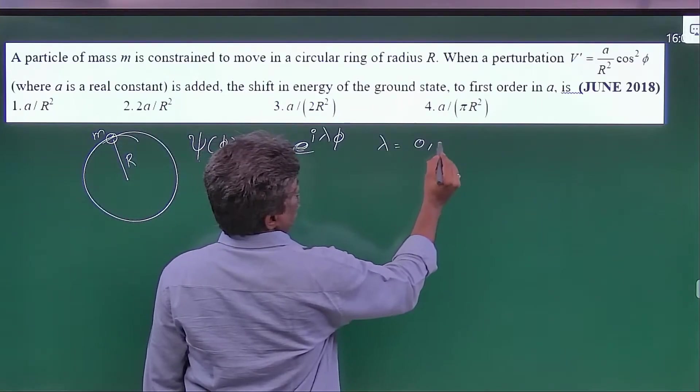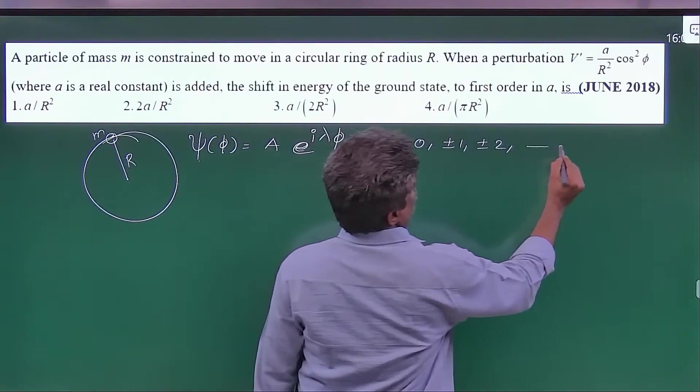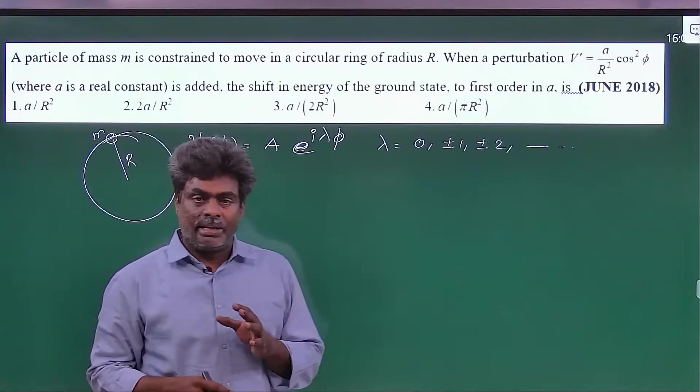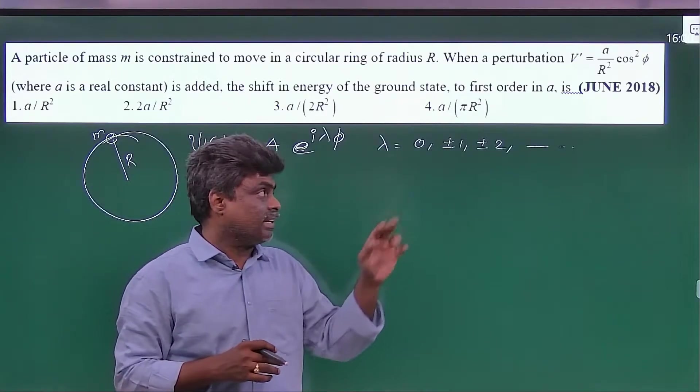Lambda takes values 0, plus or minus 1, plus or minus 2, and so on. The ground state is non-degenerate and remaining all excited states are having a degeneracy of 2.